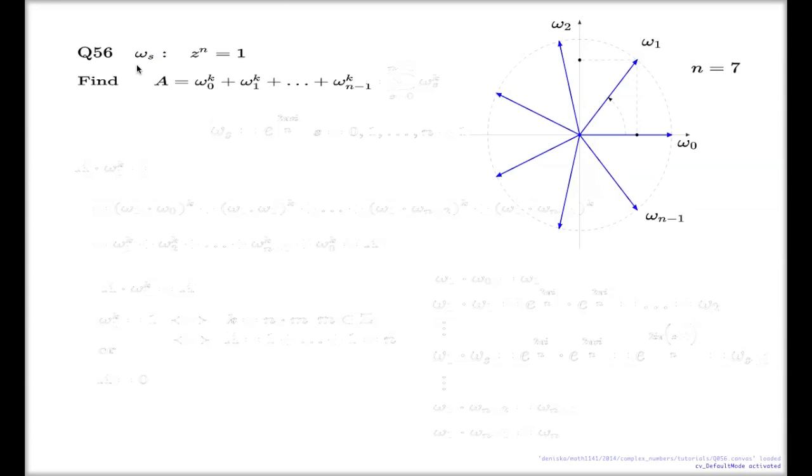Remember, this is a typical name we use to denote the roots of unities. Omega_s, it's my n roots of unities. We will have n of them all the time. Here's the example of n equals 7. Here's my 7 roots. For larger n's there will be more roots.